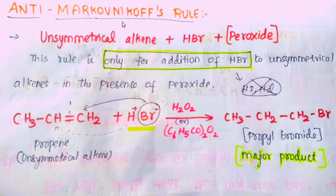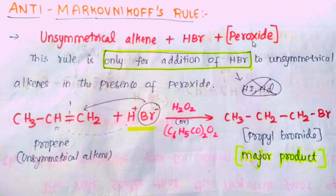How to use the anti-Markovnikov rule? The conditions are: unsymmetrical alkene plus HBr plus peroxide. Peroxide is very important. We use the anti-Markovnikov rule only for addition of HBr to unsymmetrical alkenes in the presence of peroxide.